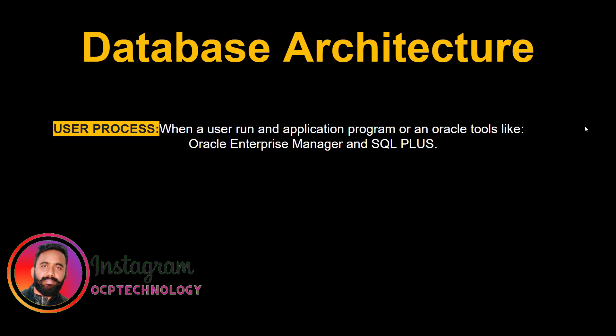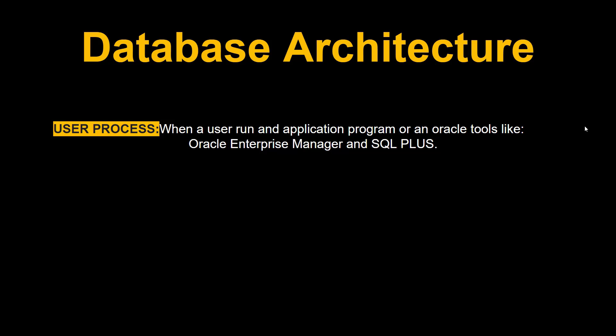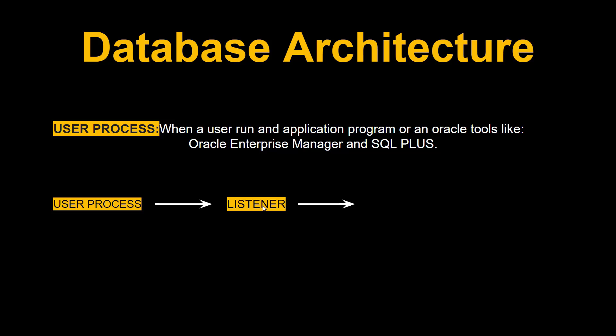A user process starts when a user runs an application program or any Oracle tool like Oracle Enterprise Manager and SQL Plus. The user process has two-way communication. First, if you have TNS entries, you can connect to the database with a user ID, password, and a TNS service name, as you can see in the command on the screen — 'ORCL' is the TNS service name.